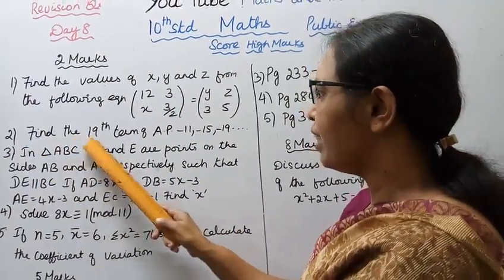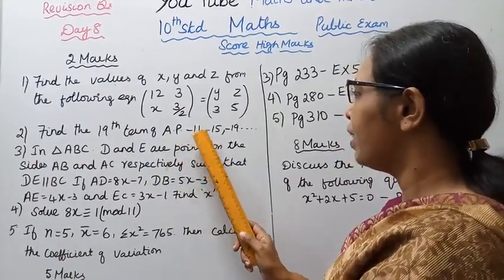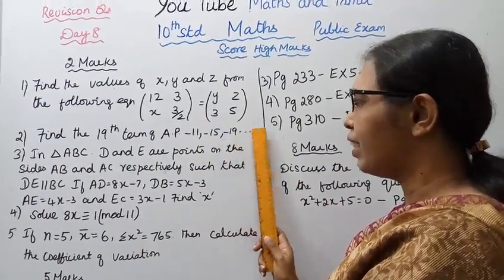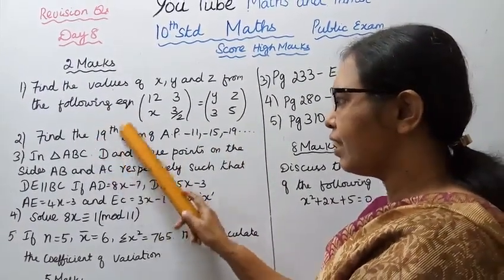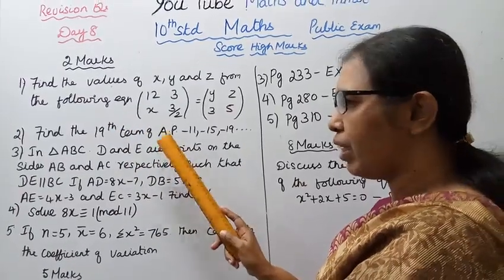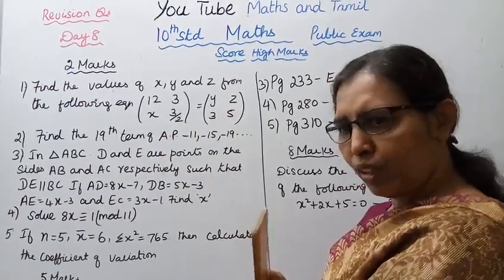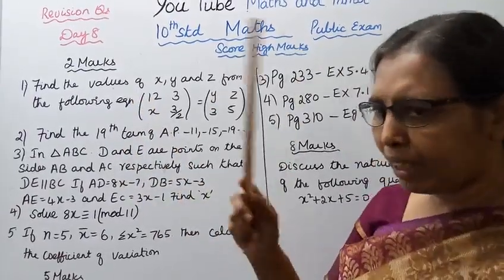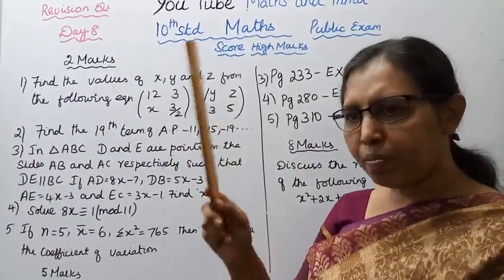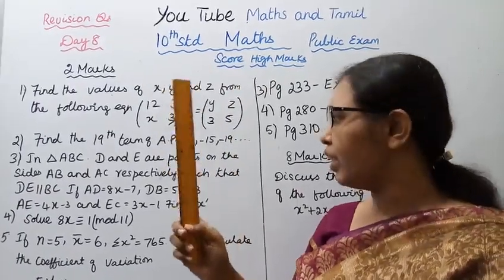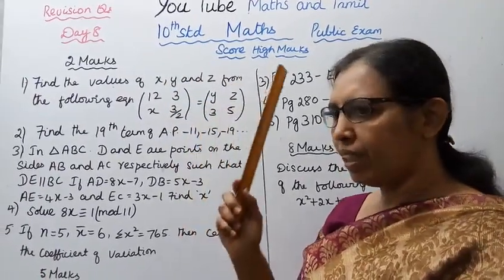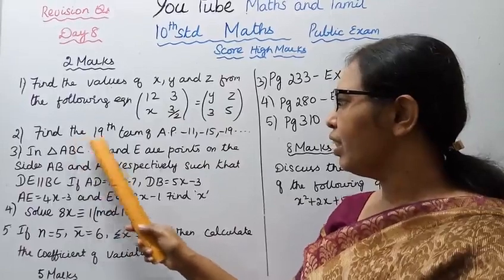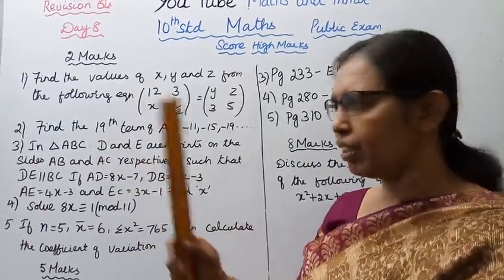Second, find the 19th term of AP: -11, -15, -19, etc. 19th term, we can confirm it's AP. The nth term formula for AP is tn = a + (n-1)d, where a is the first term, d is the common difference, and n is 19.